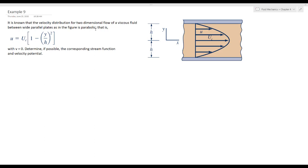is parabolic. That is, u, the velocity profile, is equal to uc, a constant, into 1 minus y over h squared, with v is equal to 0. The y component of velocity is equal to 0.